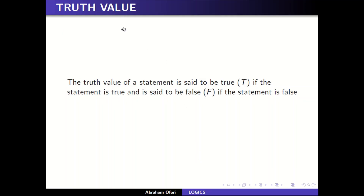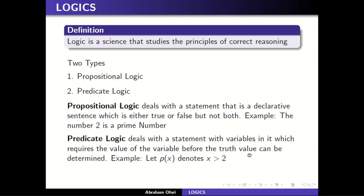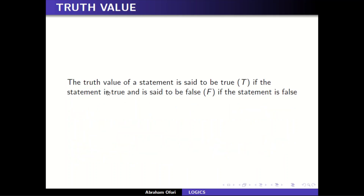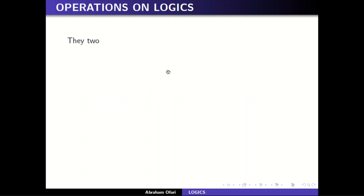We made mention of truth value — you are supposed to understand what a truth value is. The truth value of a statement is said to be true (T) if the statement is true, and false (F) if the statement is false. The truth or falsity of a statement is what we call the truth value of that statement.